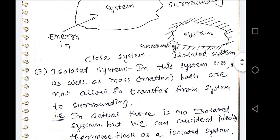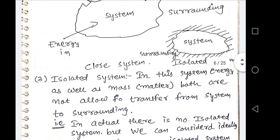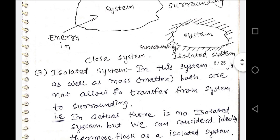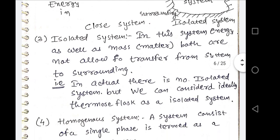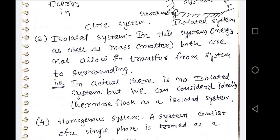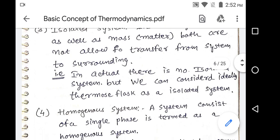In an isolated system, energy as well as matter or mass — both are not allowed to transfer from system to surrounding or surrounding to system. There is no system in the world which is truly an isolated system. But we can consider a thermos flask as an isolated system — it is not a perfect isolated system, it is just a partial isolated system.